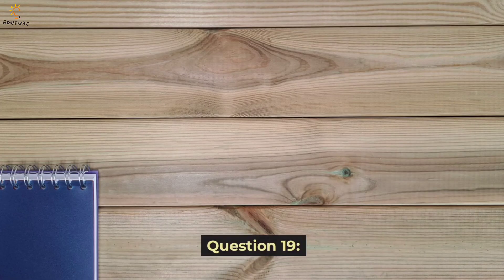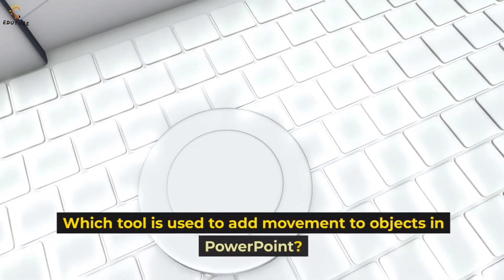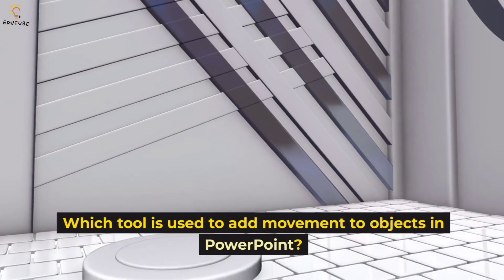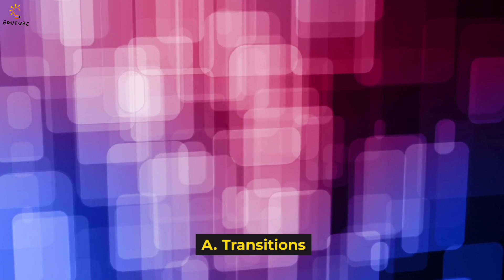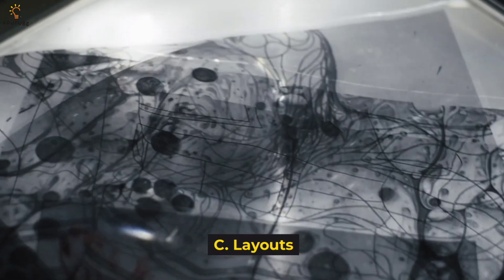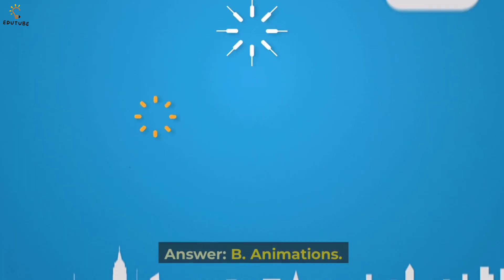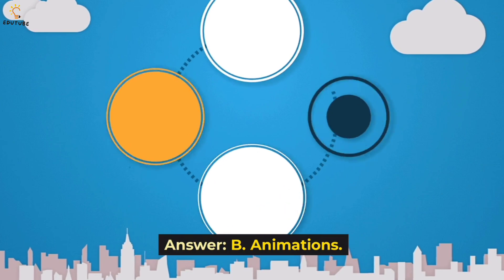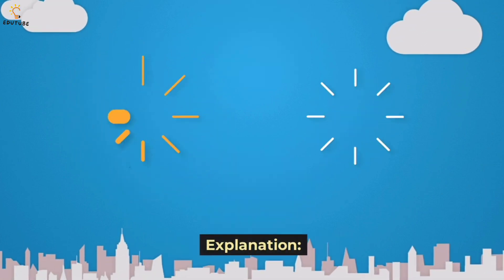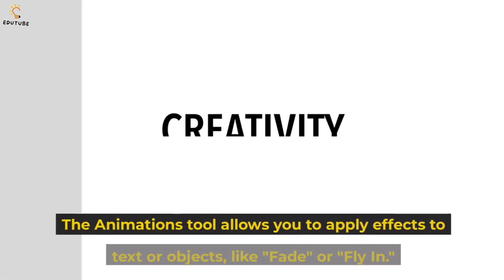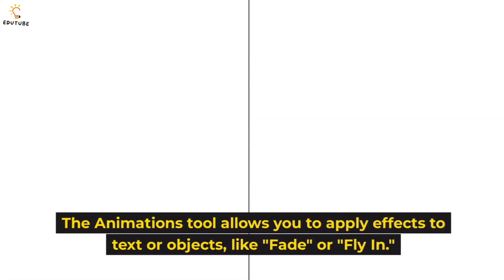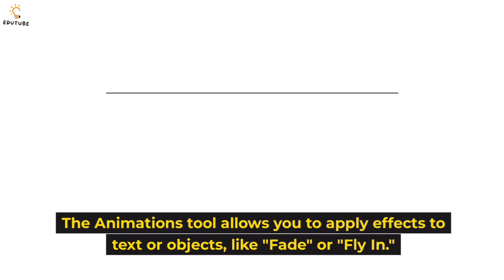Question 19: Which tool is used to add movement to objects in PowerPoint? A. Transitions, B. Animations, C. Layouts, D. Insert tab. Answer: B, animations. Explanation: The Animations tool allows you to apply effects to text or objects, like fade or fly-in.